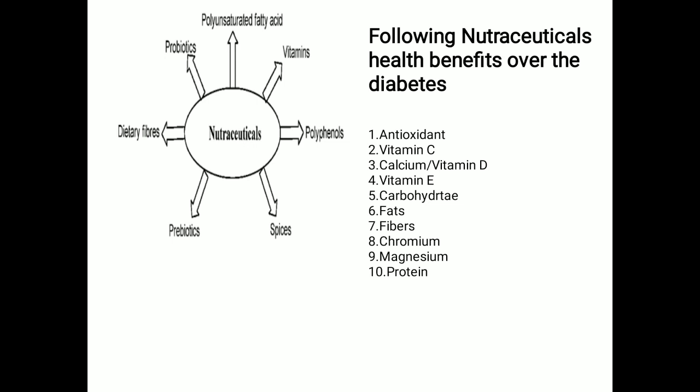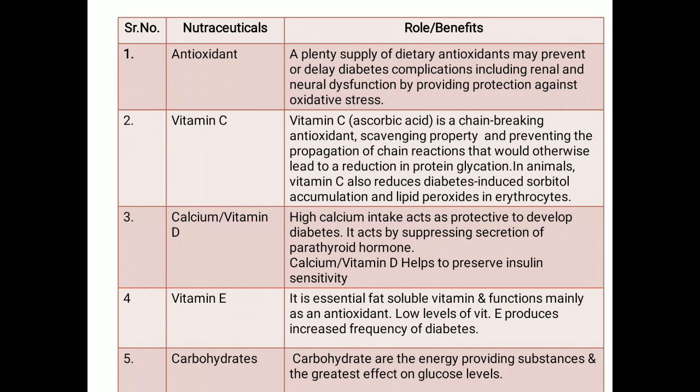The role of antioxidants in diabetes: an adequate supply of dietary antioxidants may prevent or delay diabetes complications, including renal and neural dysfunction, by providing protection against oxidative stress. The main role of antioxidants in diabetes is to reduce or prevent the complications present in diabetes and reduce oxidative stress.